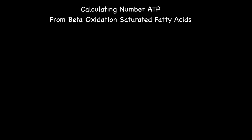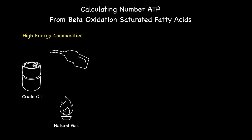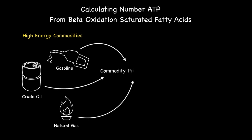Before we commence this presentation I need to talk about high energy commodities. The body, and more specifically your metabolism, produces a variety of these that it trades for energy currency in the form of ATP. Simply put, these commodities could be compared to the energy commodities in this modern world such as crude oil, natural gas, and gasoline, all of which have a commodity price commonly denoted in US currency.